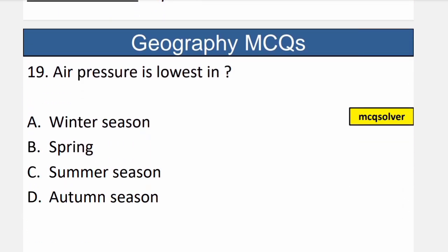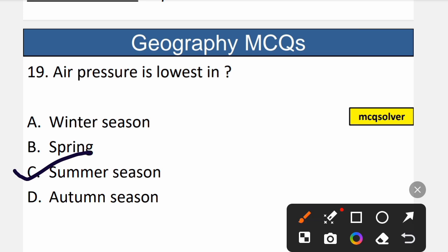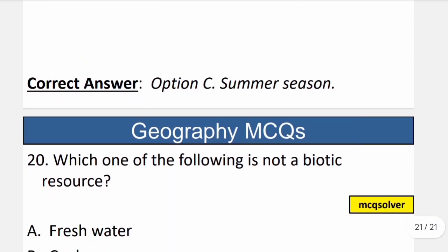Question number 19: Air pressure is lowest in which season? Air pressure is lowest during summer. So the correct option is C — summer season.